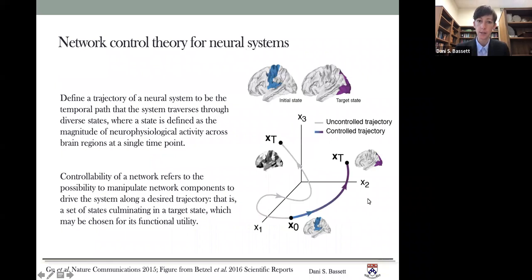How would we take this idea and apply it to neural systems? Well, first, what we would do is define a trajectory of a neural system to be the temporal path that the system traverses through diverse states where a state is defined as the magnitude of neurophysiological activity across brain regions at a single time point. So, for example, a single TR in fMRI data or a single time point in some other kind of imaging technique.